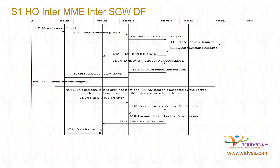Target SGW sends S11 Create Session Response to target MME. Target MME sends S1-AP Handover Request message to target ENB. Target ENB sets up the radio bearers and sends S1-AP Handover Request Acknowledge message to target MME with target ENB FTEID for downlink path. Target MME sends S10 Forward Relocation Response to source MME.